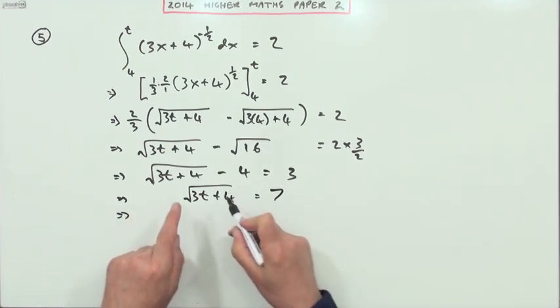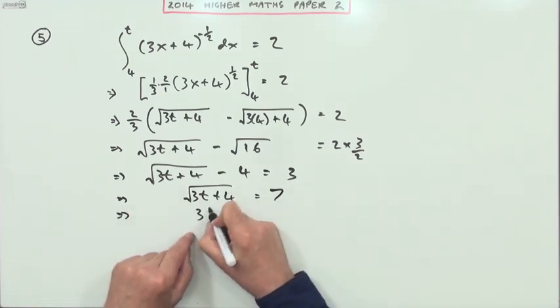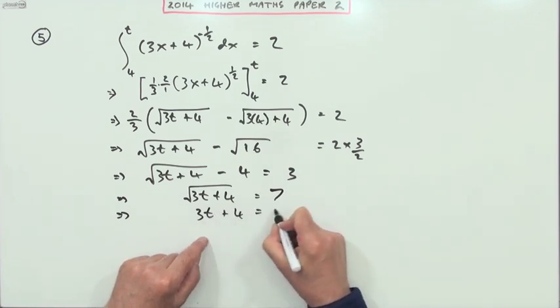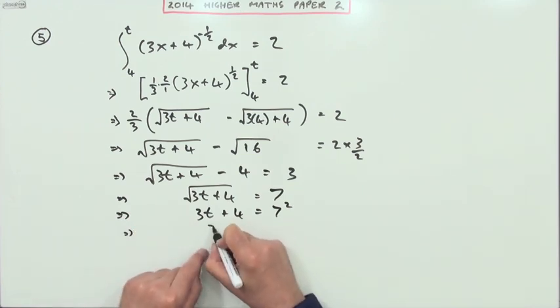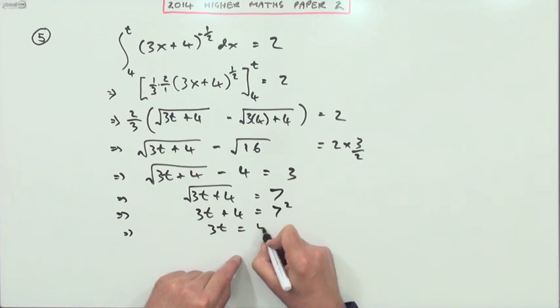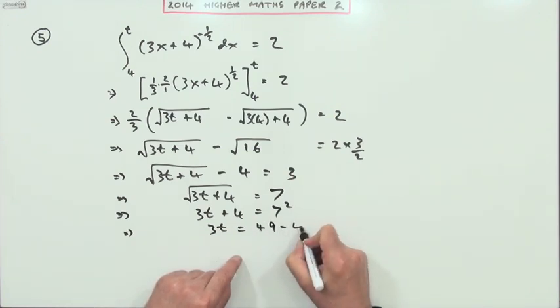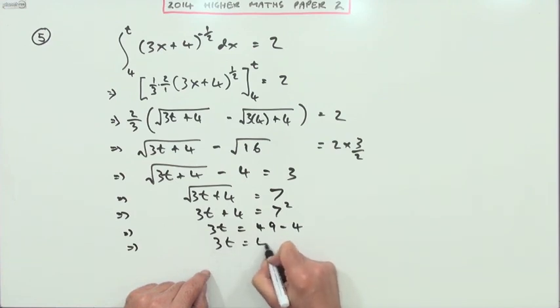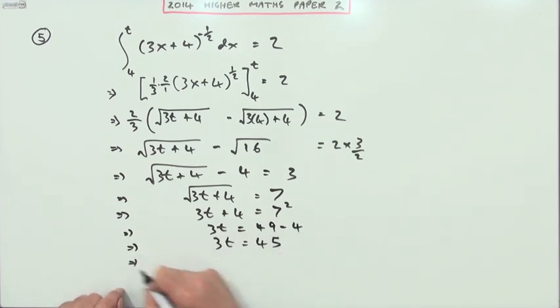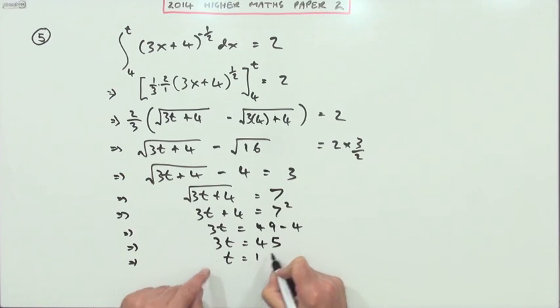Removing the square root by squaring both sides: 3t plus 4 equals - maybe I'll show it as 7 squared to show what's happening. I've squared the other side, which means 3t will be - and of course that's 49 - but take away 4, so 3t is 45. And finally, t is 45 divided by 3: 15. So there's the answer.